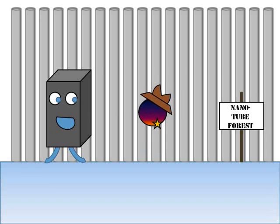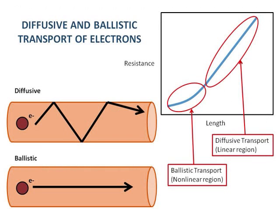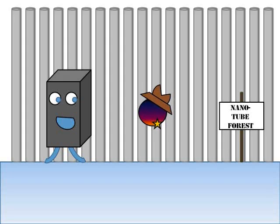The length of the tube can also have an effect on the conductivity. Normally, electrons in a tube exhibit diffusive transport, and the resistance of the tube is proportional to the length. But if a tube is very short, it can exhibit ballistic transport, like the nano-bullets from our nano-six shooters, and resistance is no longer proportional.